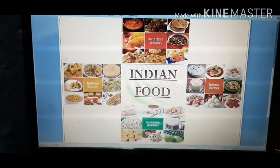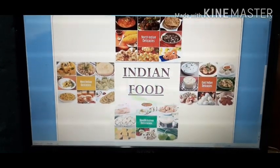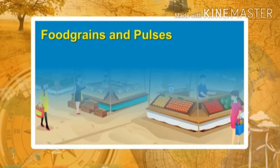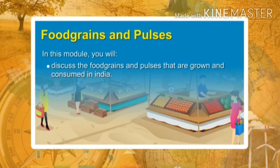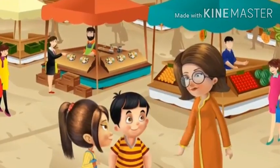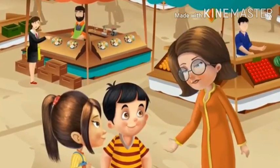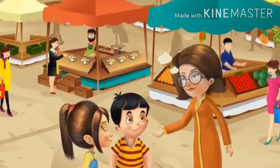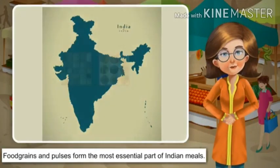Here is a video that will help you understand this chapter in a better way. In India, people belonging to different regions eat different types of food, but food grains and pulses form the most essential part of the meal in almost every part of the country.